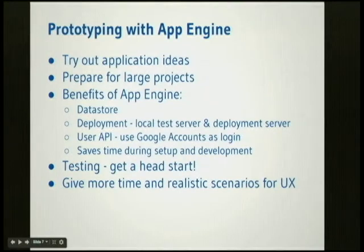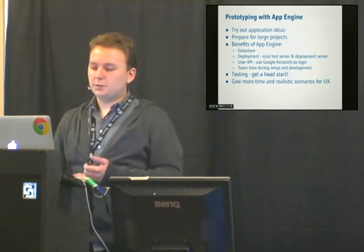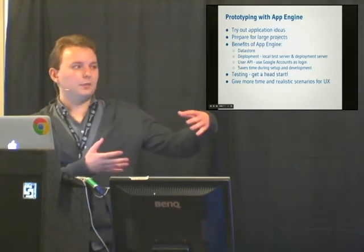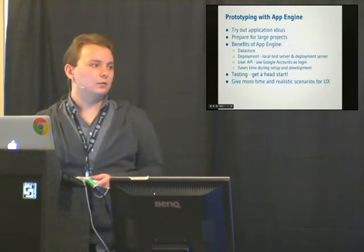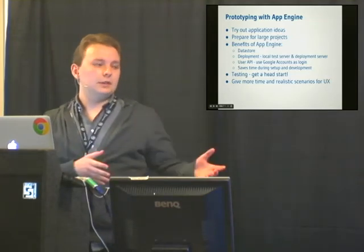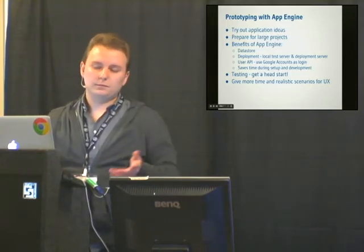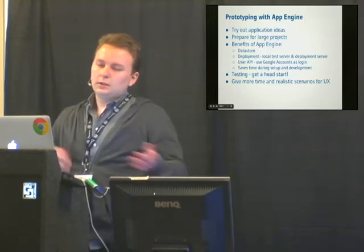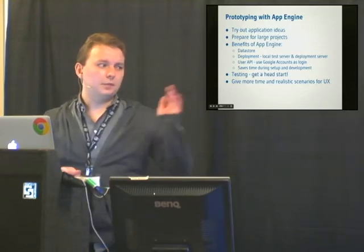Prototyping with App Engine — why I chose it for my GatherAt clone. It lets you try out your application idea really quickly and see if it works. It can help you prepare for a larger project; for example, if I'm creating a large meetup site, I can prototype the gathering component alone and see how well the idea works. Benefits include a simple data store, easy deployment, a local test server, and the User API. You can use Google Accounts or OAuth2 so you don't have to write your own auth — login, logout, and user models. You can just use Google Accounts, which is really easy to set up.